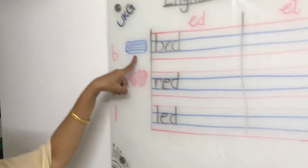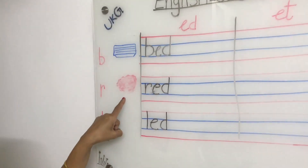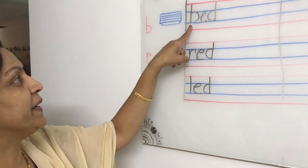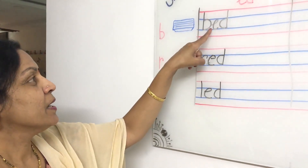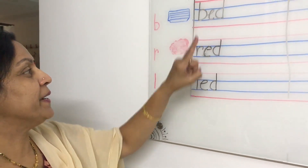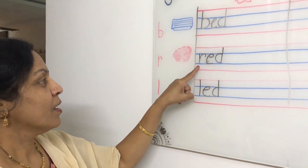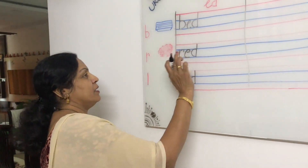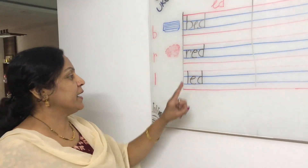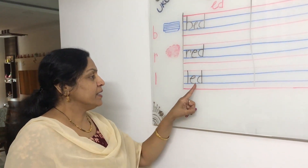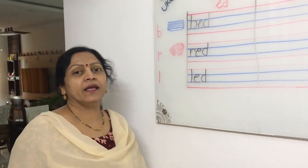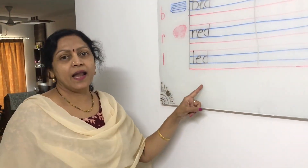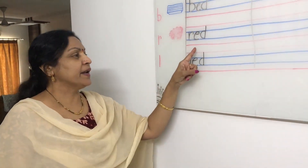See here — this is BED. This is the color RED. B-E-D, BED. R-E-D, RED. L-E-D, LED. BED, RED, LED.